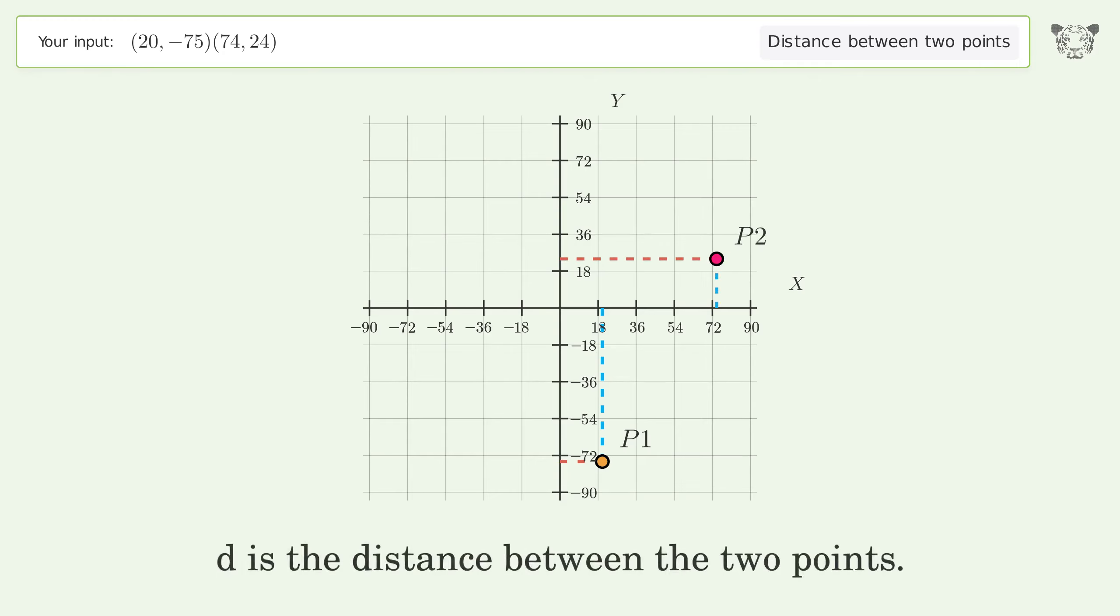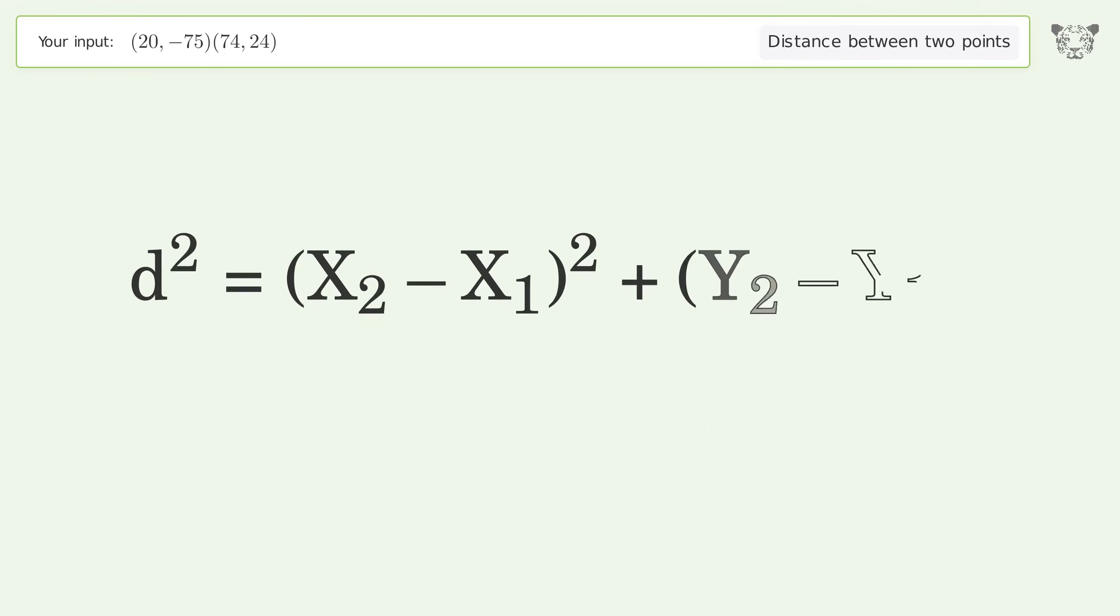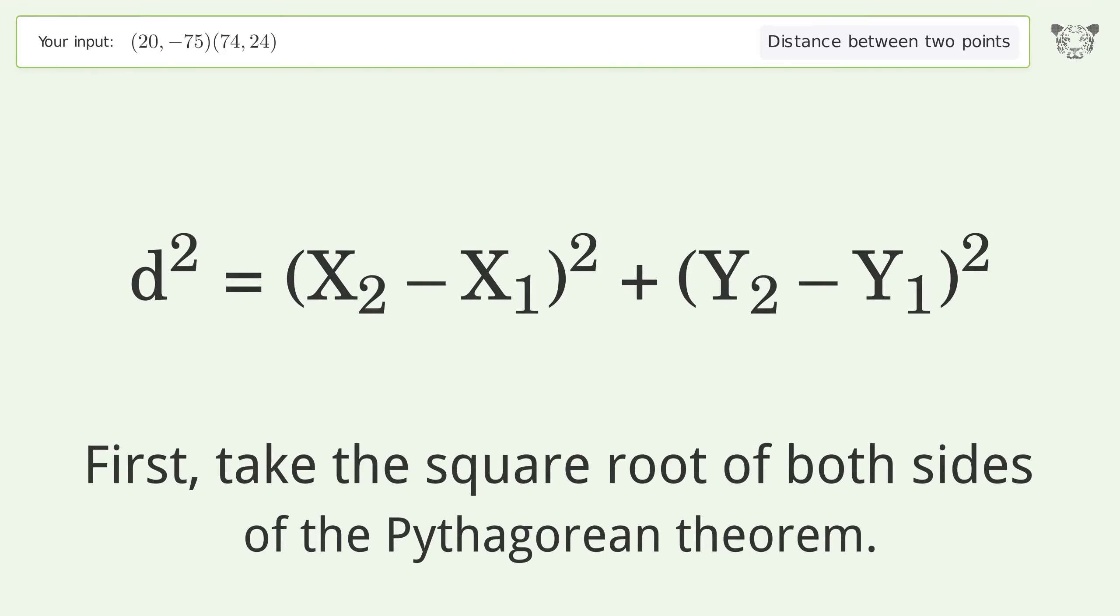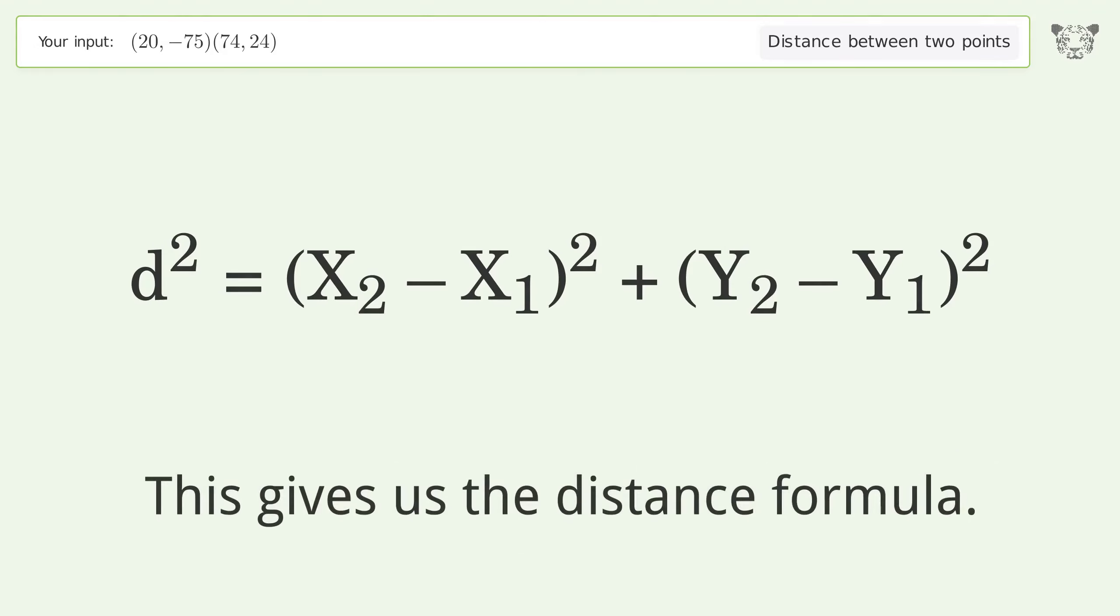d is the distance between the two points. First take the square root of both sides of the Pythagorean theorem. This gives us the distance formula.